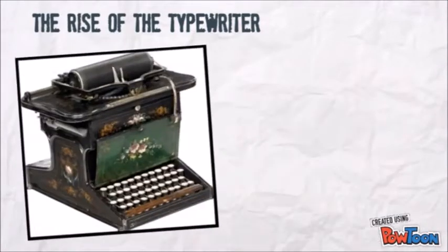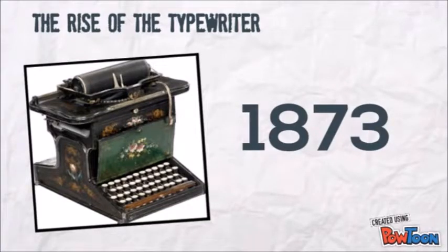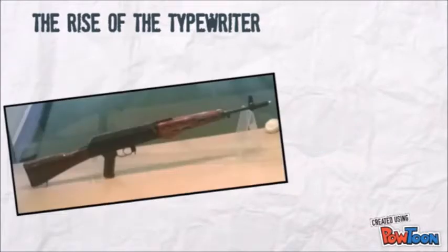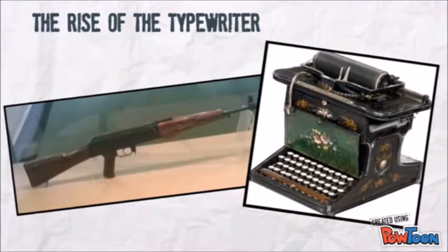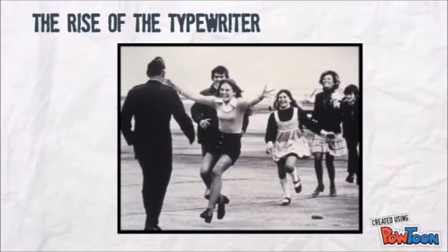The first Sholes and Glidden typewriter was not offered for sale until 1873, seven years after its creation, and sales did not take off immediately. It wasn't until later, with additional improvements made by Remington, that its popularity took off. But what was a gun manufacturer like Remington doing marketing a typewriter? Well, in the 1870s, the American Civil War had come to an end and the sale of rifles decreased. Remington was looking for a new product to sell. The gamble paid off, and with some tweaking, Remington quickly made a lot of money off the typewriter.